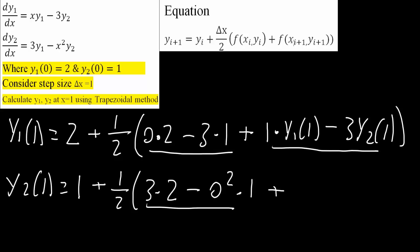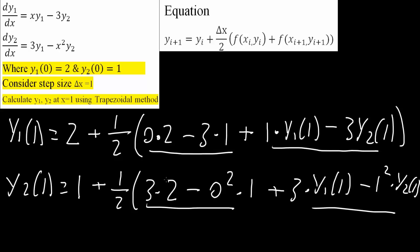Plus the xi+1 term: what is the value of y when x is equal to 1? So we have plus 3 times y1(1). Minus — now x increases by the step size of 1, so we get 1 squared times y2(1) — we don't know the value of y2 when x is equal to 1. So now we have two unknowns and two equations: one unknown is y1(1) and the other is y2(1).